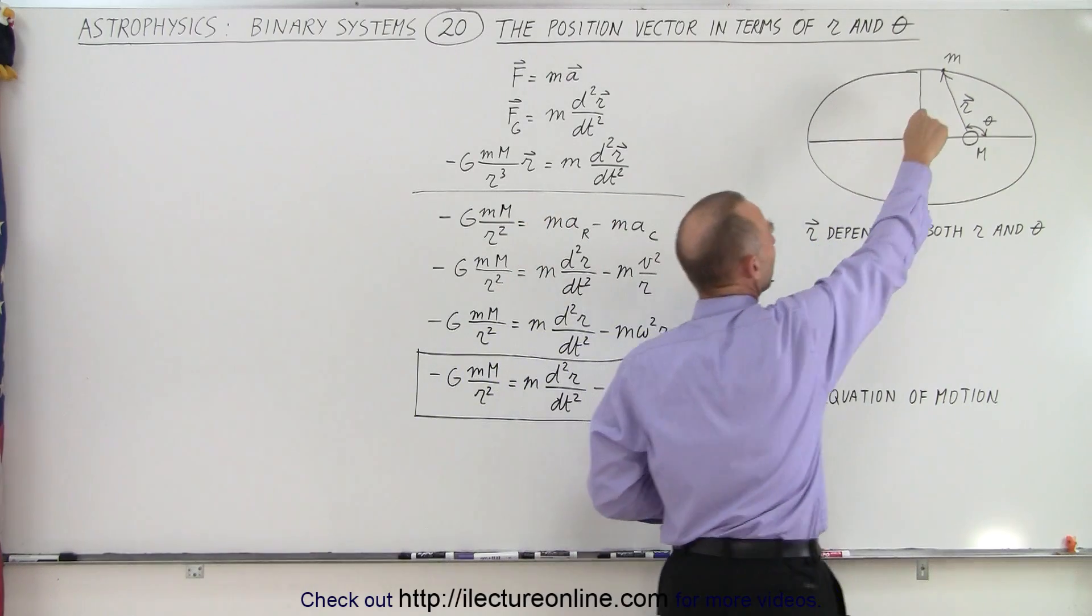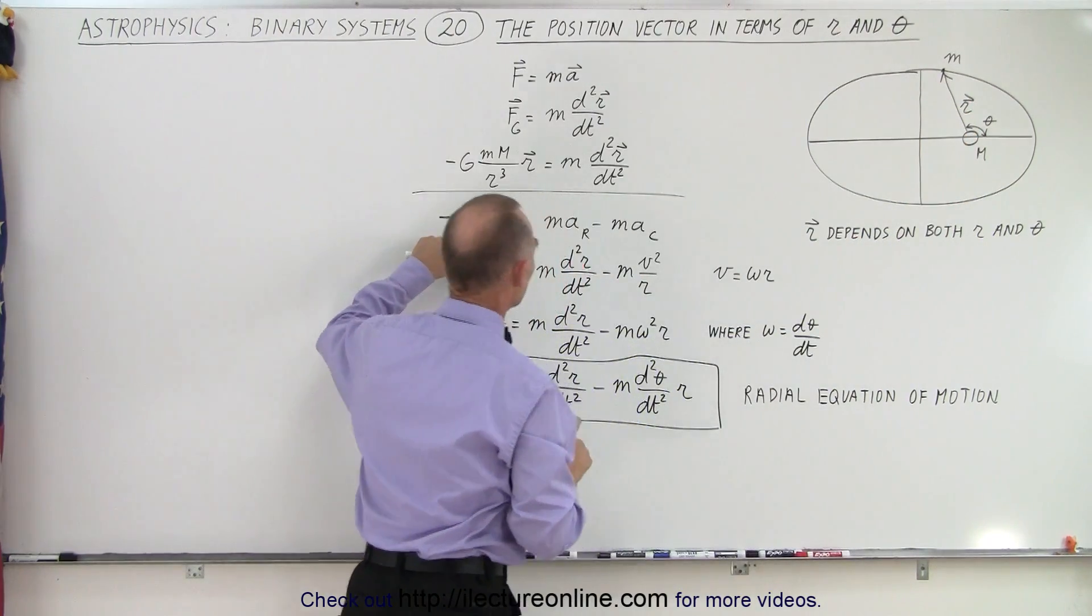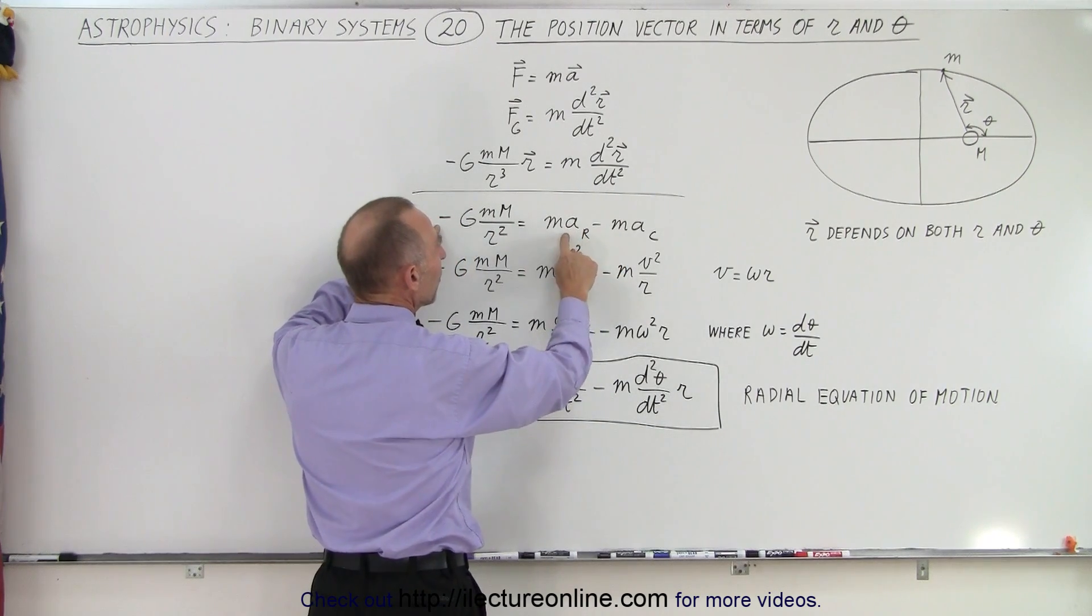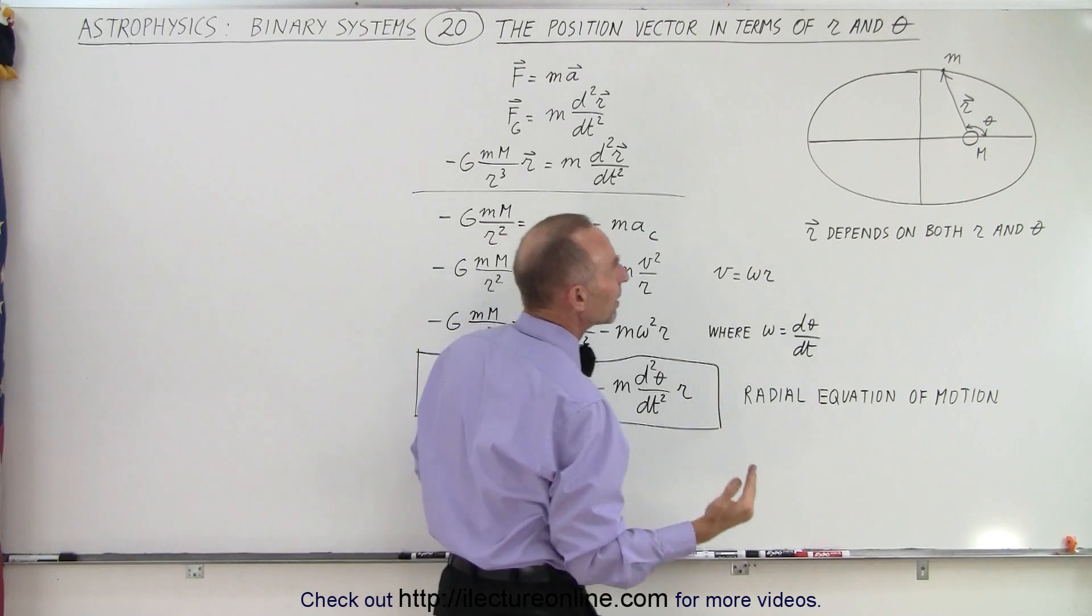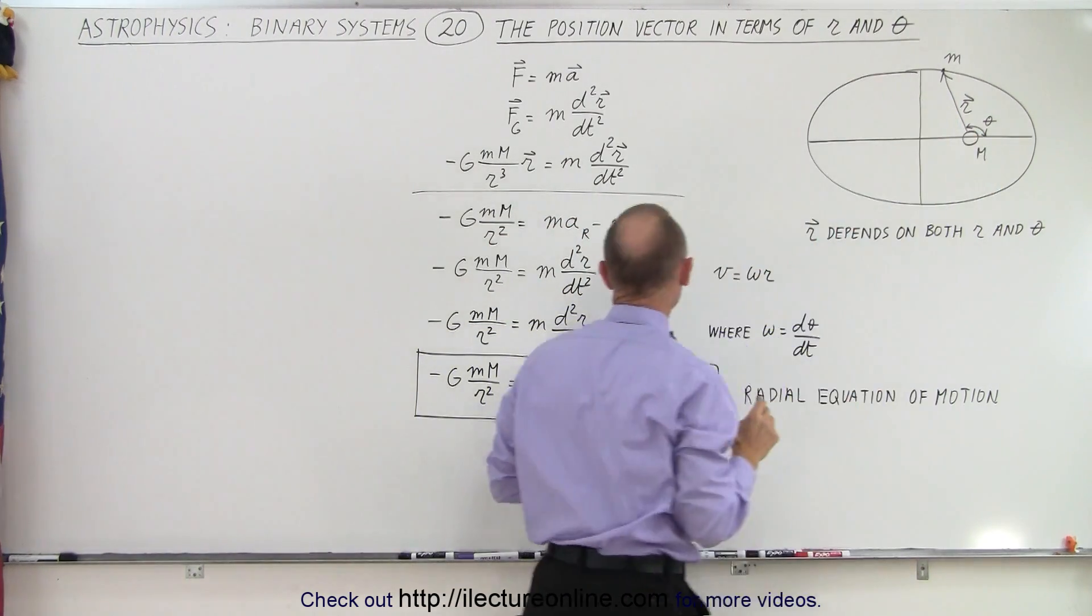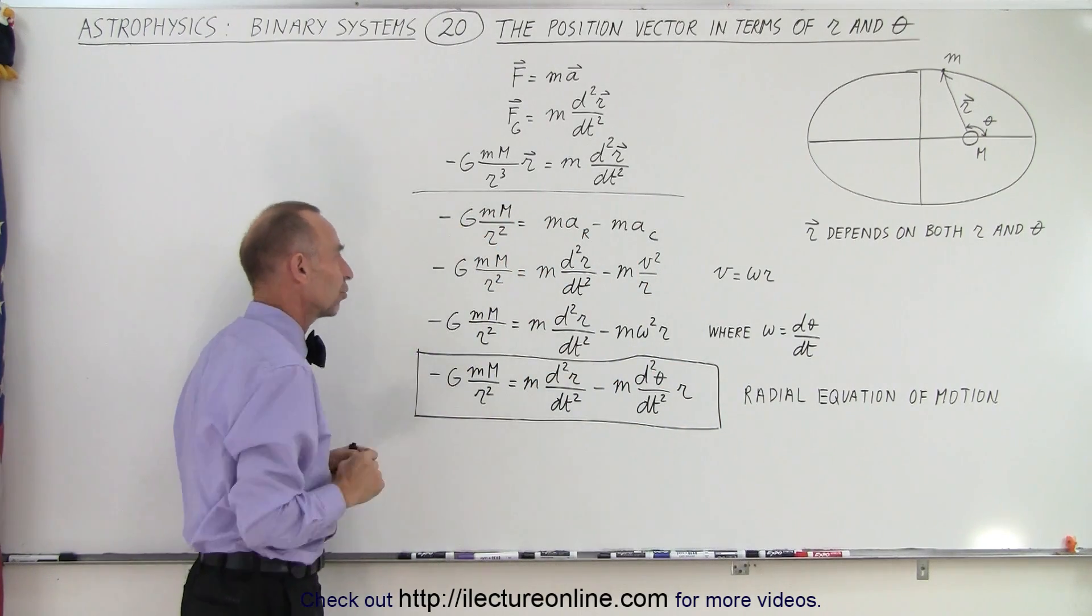Notice the centripetal acceleration is always going to be in the same direction as the force of gravity—that's why they both have a negative sign—but the radial direction will be in the opposite direction because it's using the position vector going in that direction. That's why we get the negative sign relative to the gravitational force.